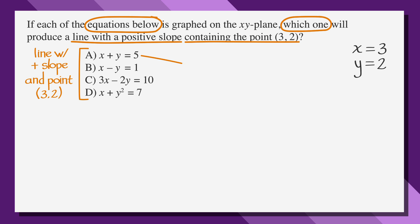Starting with answer choice A, we get 3 plus 2 equals 5. That works out to 5 equals 5, which is true. But before we pick A, let's check out the other answer choices. Answer choice B becomes 3 minus 2 equals 1, which is also true, which means we're going to have to do more work.